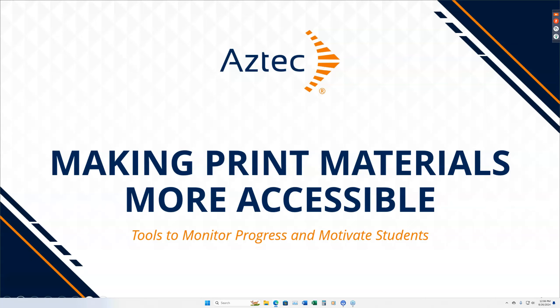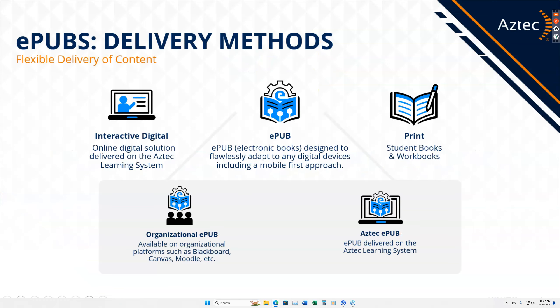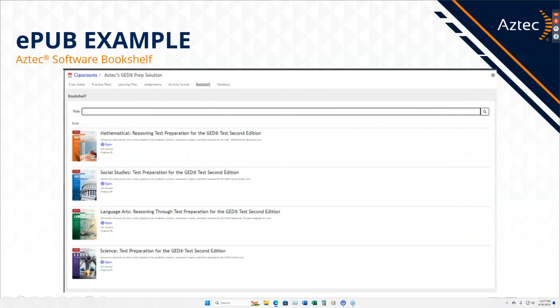Being able to take print materials and make them accessible to all students can sometimes be tricky. During the pandemic, I actually purchased print materials for my students and doorbell-ditched them at their houses when we were in lockdown, because we didn't have access to the ePubs. ePubs are electronic books like you would read on your Kindle or Nook. They're available as organizational ePubs — you could put the ePub on Moodle, Canvas, or Blackboard — but also available as an ePub you purchase licensing for, accessible directly on the Aztec learning system platform.